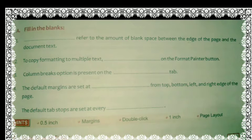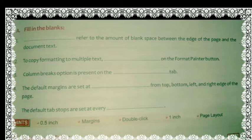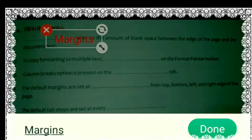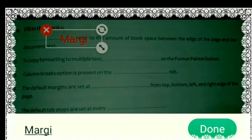The first question: dash refers to the amount of blank space between the edges of the page and the document text. The edges of the page and the document text written in our document — that space is known as margin. So the right answer is margins. Here we will write: margins.